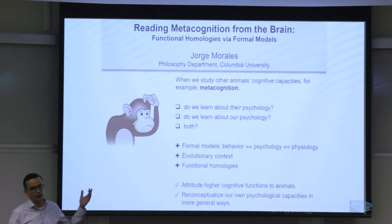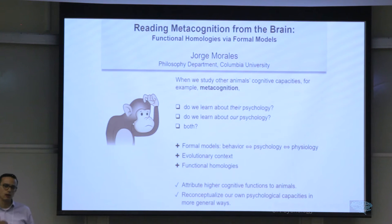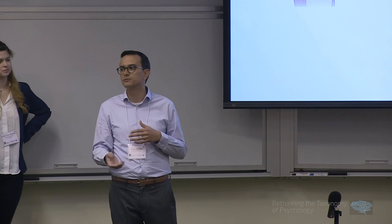I argue that we can do that, but we need certain constraints. One of them is having very clear formal models that allow us to link physiology, behavior, and the psychological functions that we're testing. We have to consider the evolutionary context—just to know which types of animals we're testing. Some metacognitive tests have been done with rats and with macaques, and those two can't be interpreted in the same way. Finally, I talk about functional homologies and how we can attribute homologous functions, complex mental functions, to other animals. So I conclude that we can both attribute new functions or high cognitive functions to other animals when we use this strategy, at the same time that we can rethink our own mental functions in light of what we discover in other species.